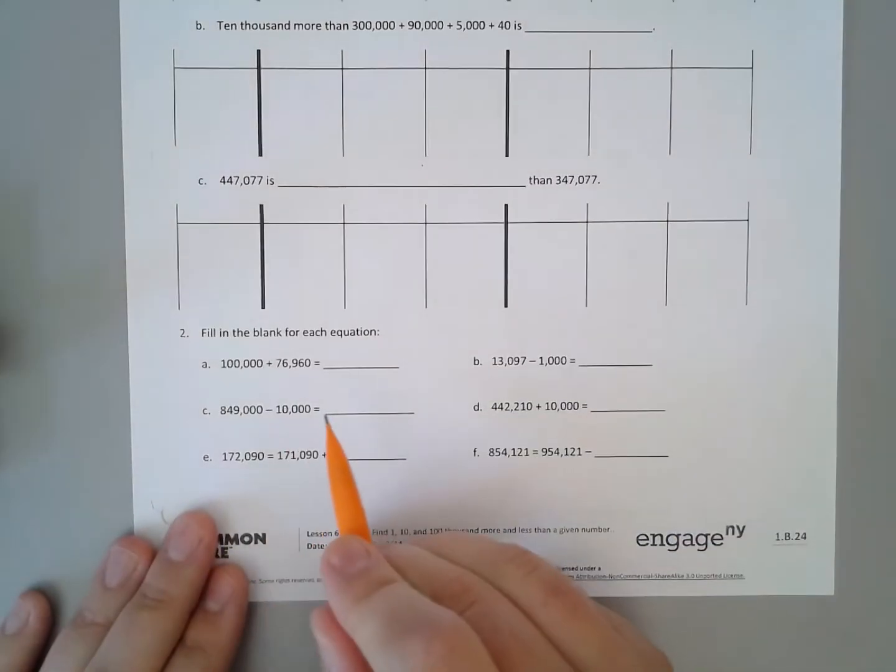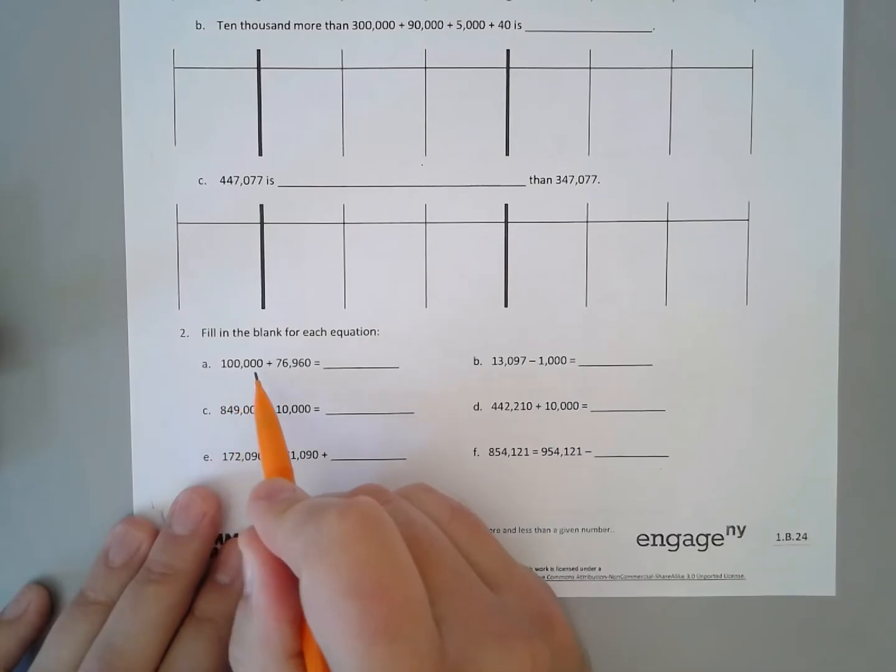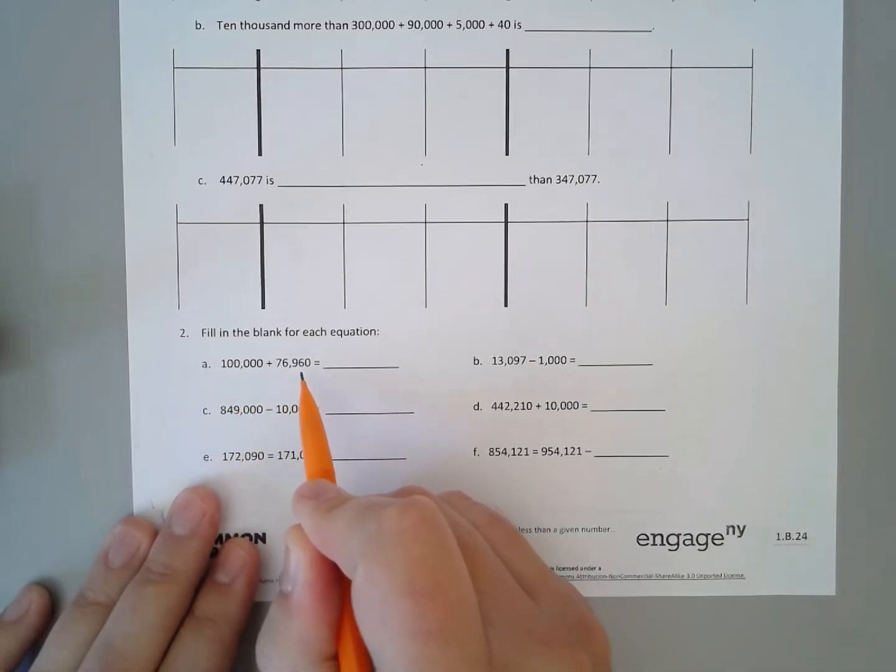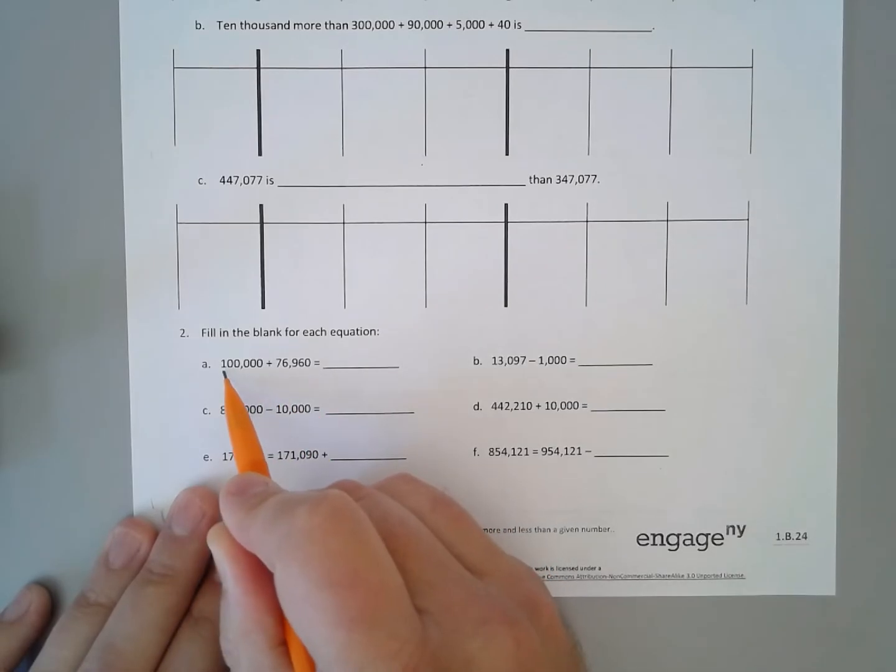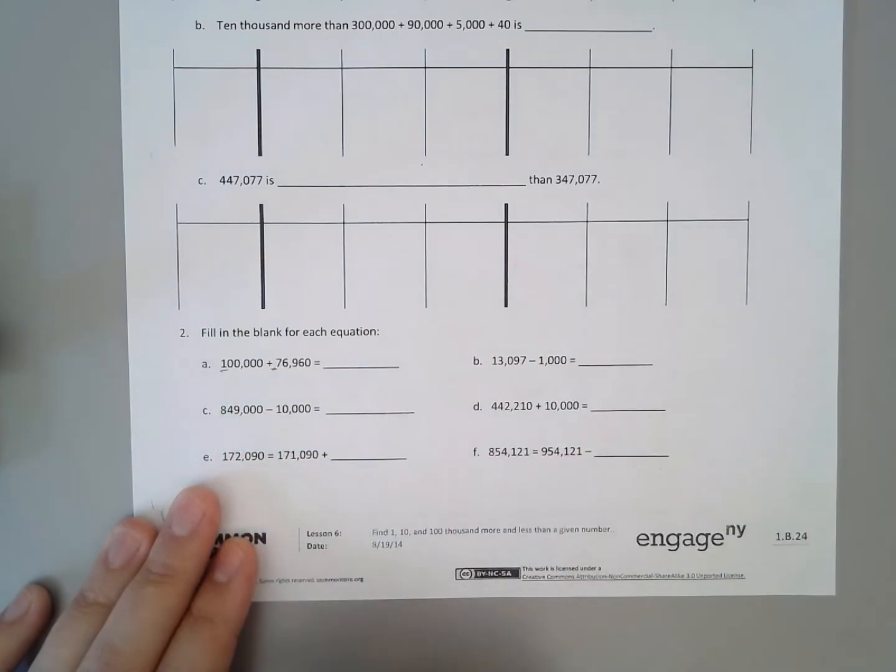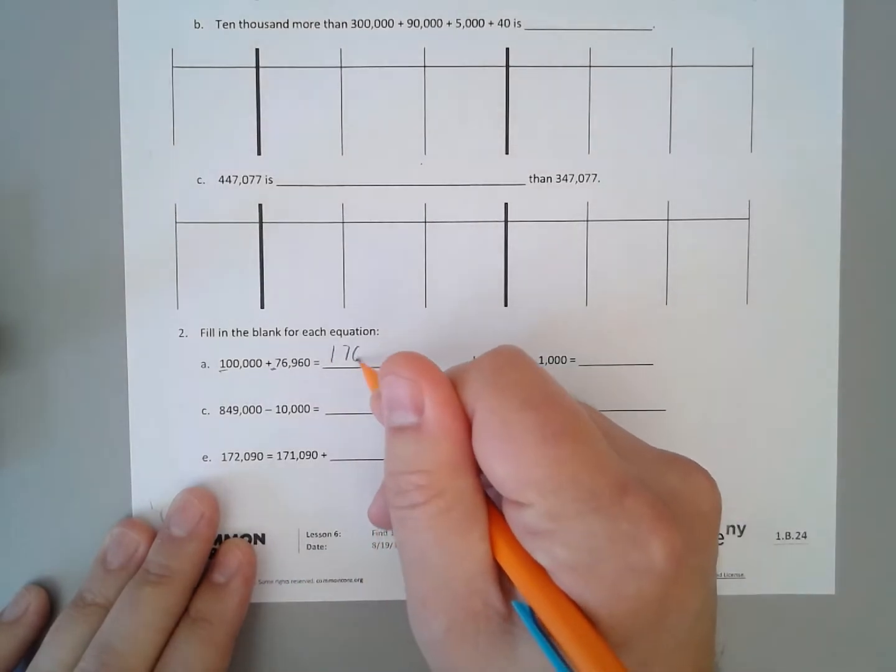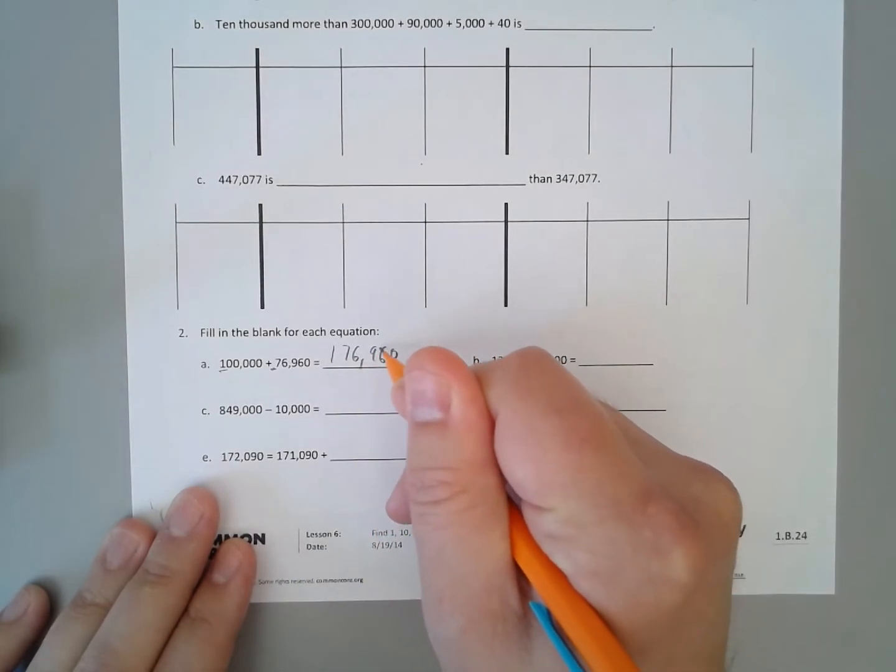If we look at the bottom, these are just math problems without using the place value disks. So we have 100,000 plus 76,960. If we look at our difference, we're adding 100,000. We do not have a number in our hundred thousands column there. So we are just going 176,960.